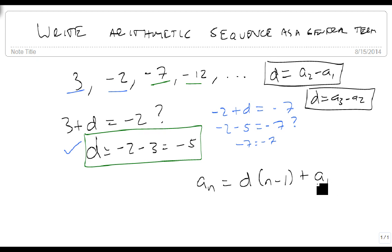So if you know what a1 is and you know what d is, then you can get your general form. Well we know both of those. Here's our a1 and here's our d. So the general form for this particular problem is an equals minus 5 times n minus 1 plus 3.